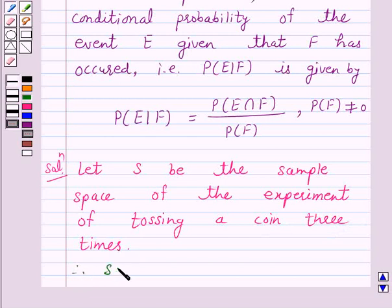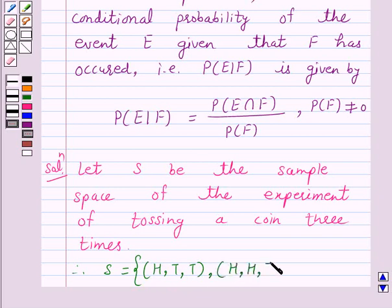S is equal to HTT, that is head on the first toss and tails on the third toss. HHT, that is head on the first and second toss and tail on the third toss.